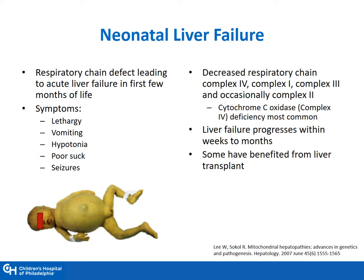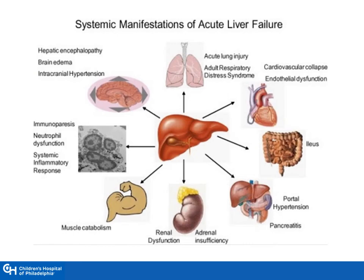While some have benefited from liver transplant, liver failure is usually progressive within weeks to months and at most times is fatal. Two different mitochondrial disorders associated with neonatal liver failure include mitochondrial DNA depletion syndrome and Alpers syndrome. Acute liver failure manifests not only with liver disease, but with a variety of different symptoms, including lung injury, cardiovascular collapse, brain edema with intracranial hypertension, and adrenal insufficiency.